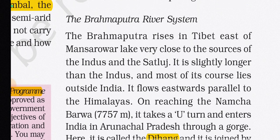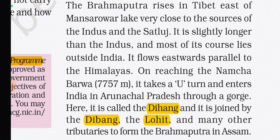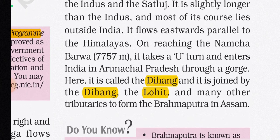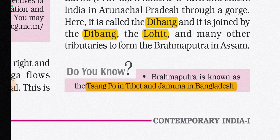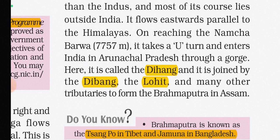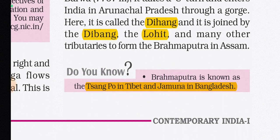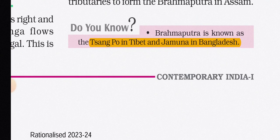The Brahmaputra rises in Tibet east of Mansarovar Lake, very close to the sources of the Indus and Satluj. It is slightly longer than the Indus and most of its course lies outside India. It flows eastwards parallel to the Himalayas, and on reaching Namcha Barwa, it takes a U-turn and enters India through a gorge in Arunachal Pradesh. Here it is called the Dihang, joined by the Dibang and the Lohit. In Tibet, it is known as the Tsangpo, and in Bangladesh as the Jamuna.